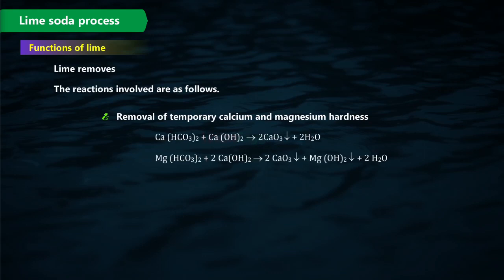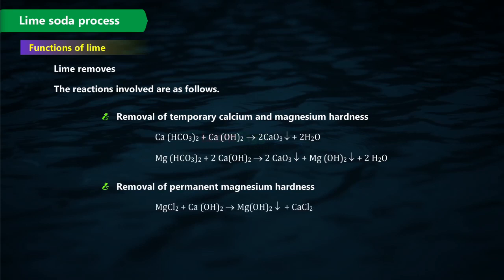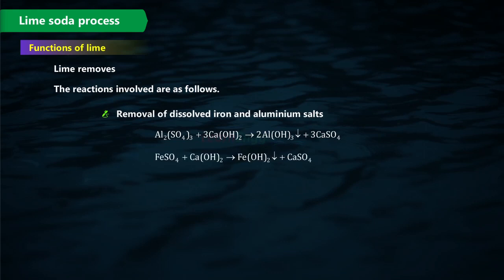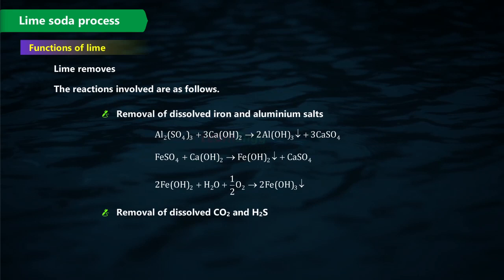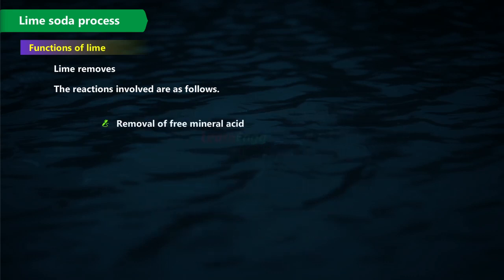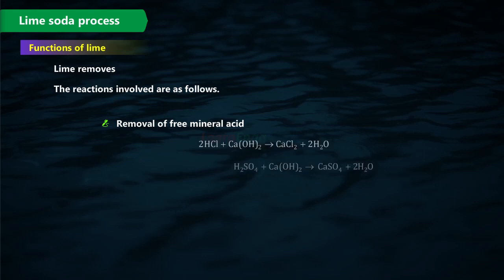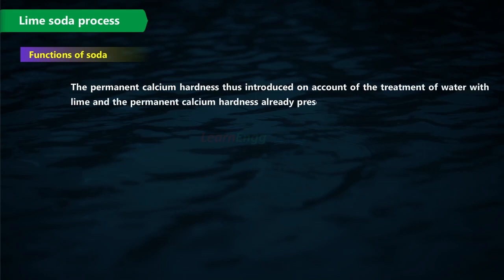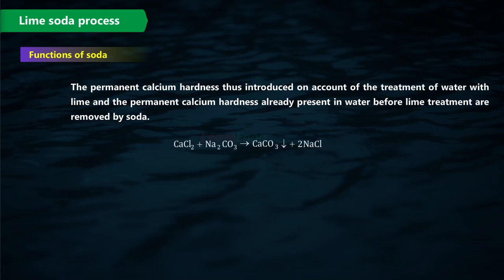In the lime soda process, lime performs the following functions: removal of temporary calcium and magnesium hardness, removal of permanent magnesium hardness, removal of dissolved iron and aluminum salts, removal of dissolved CO₂ and H₂S, and removal of free mineral acid. The hardness salts removed by lime are then removed by soda.